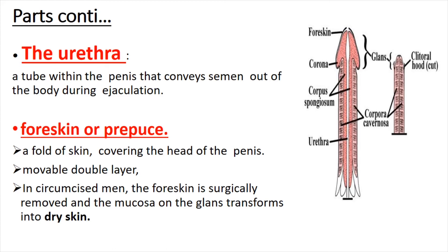The urethra is a tube-like structure within the penis that conveys semen out of the body during ejaculation, as well as urine from the bladder to the outside of the body.